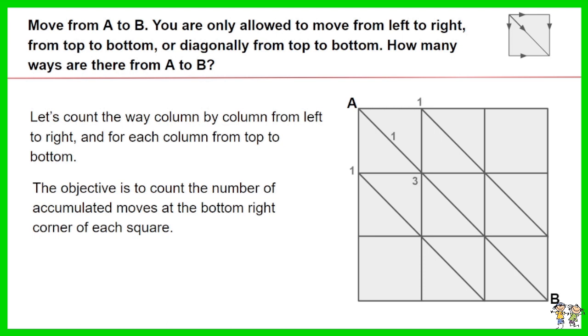Start with the left column and the first square at the top. The accumulated ways at the bottom right corner is 3, as shown.